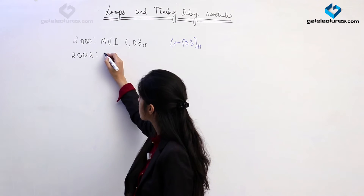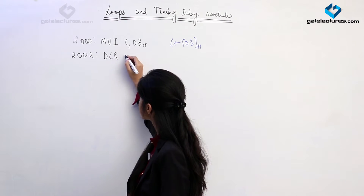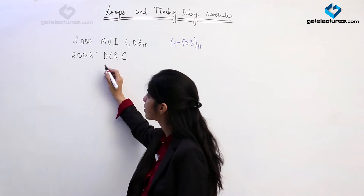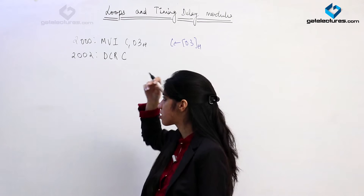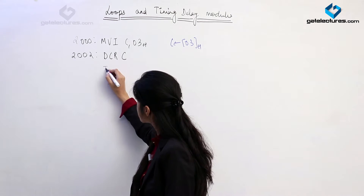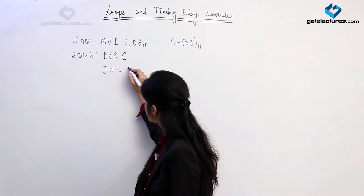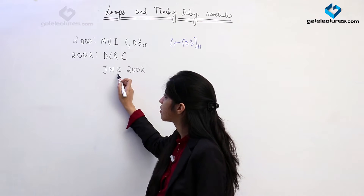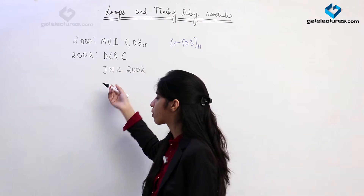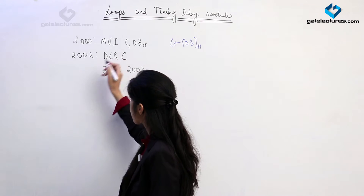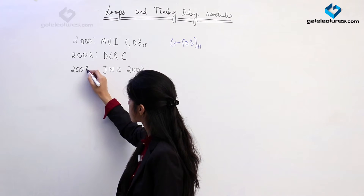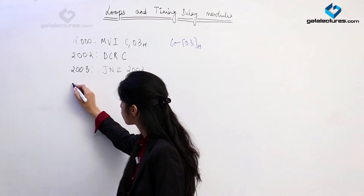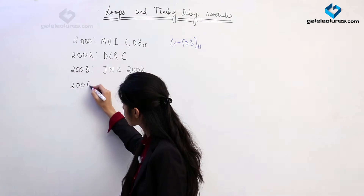Here I am giving a simple instruction DCR C. Then I am giving a conditional jump instruction JNZ 2002. DCR C is a one-byte instruction, so its address is 2002 and the next instruction is going to be at 2003. JNZ is a three-byte instruction, so the next instruction comes at address 2006.